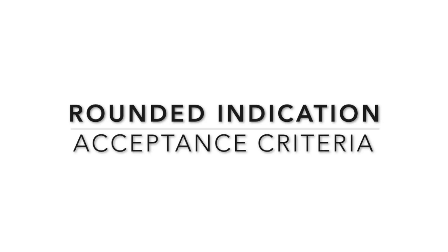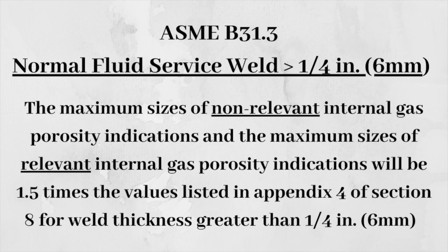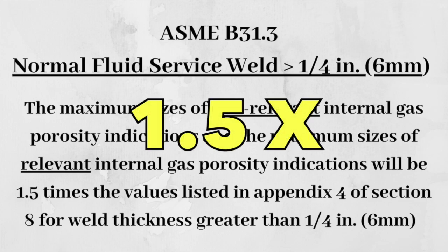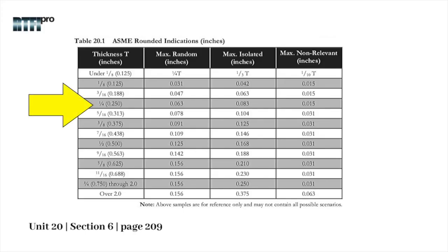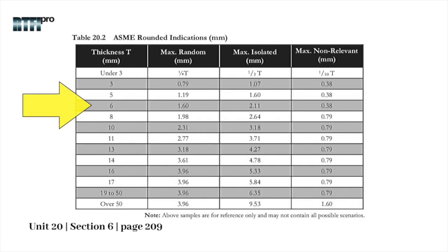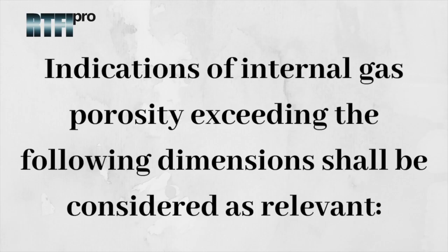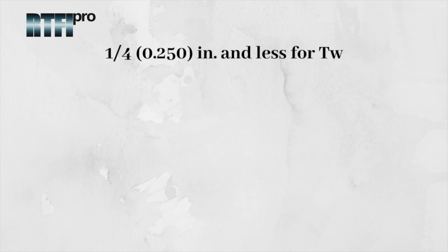Rounded indication criteria for welds greater than 6 millimeters. ASME B31.3 Normal Fluid Service welds greater than a quarter inch or 6 millimeters. The maximum sizes of non-relevant internal gas porosity indications and the maximum sizes of relevant internal gas porosity indications will be 1.5 times the values listed in Appendix 4 of Section 8 for weld thickness greater than one quarter inch or 6 millimeters. Indications of internal gas porosity exceeding the following dimensions shall be considered as relevant: 1/4, 0.25 inch and less.